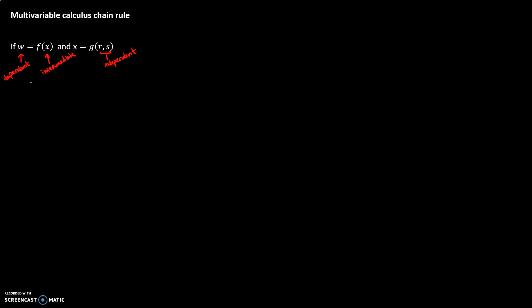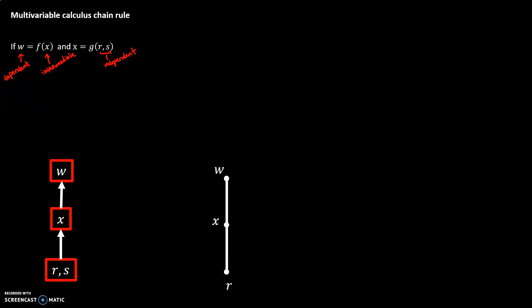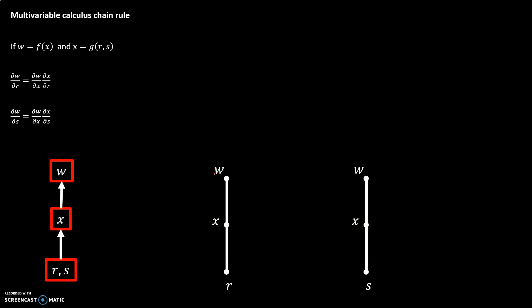When we go to make our diagram, we have two independent variables that lead to one intermediate variable and one dependent variable. With two independent variables, we can ask about w changing with respect to r or w changing with respect to s. Each one of these partial derivatives — w with respect to r or w with respect to s — is a single-term formula for the chain rule.